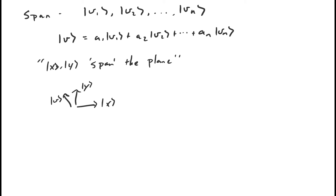X and y span the plane, but so do x and the vector xy that we talked about last time. We showed that any arbitrary vector in the plane can be expressed as a linear combination of x and xy. That's another way of saying that x and xy span the plane.